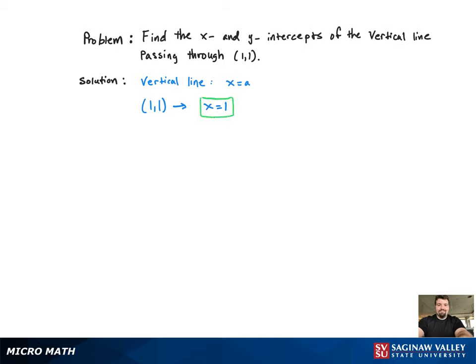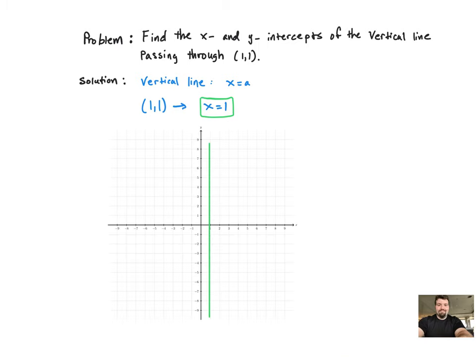Now if we want to find the x and y intercepts, the best way is just to observe the graph. So that's the graph of the vertical line x equal to 1.